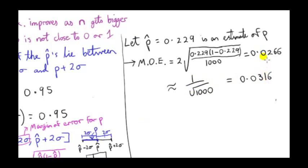So here are two values for the 95% margin of error. The 1 over root n value is always going to be at least equal to this more accurate value actually. This is the more accurate value.